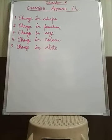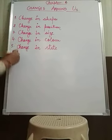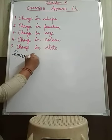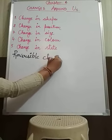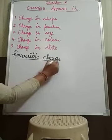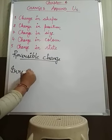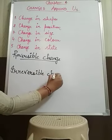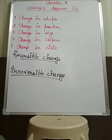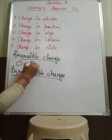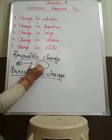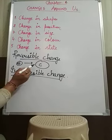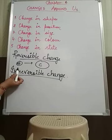After this, we will come to reversible and irreversible changes. Reversible changes are those which return to their original state, and irreversible changes are those which do not return to their original state. For example, the dough converts into chapati — can that chapati be converted back into dough? No. So this is an irreversible change.